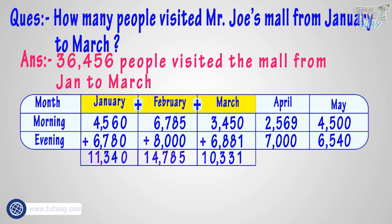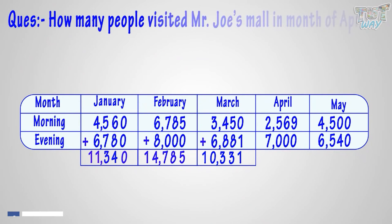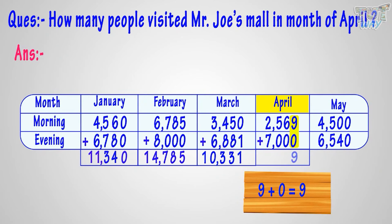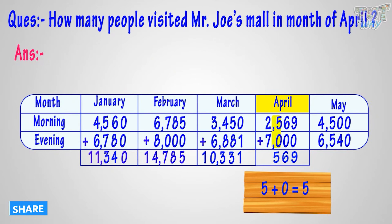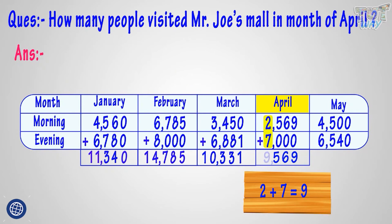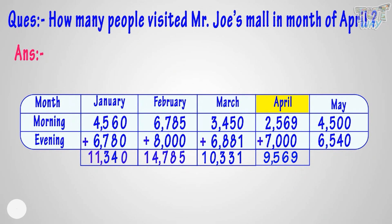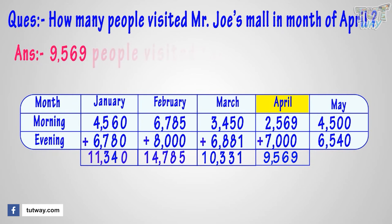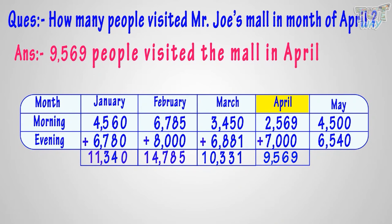So kids, you know how to add big numbers like four or five digit numbers. Now let's answer a few more questions quickly. Adding nine and zero we get nine — write nine in the sum at ones place. Adding six and zero we get six — write six in the sum at tens place. Adding five and zero we get five — write five at hundreds place. Adding two and seven we get nine — write nine at thousands place. We get nine thousand five hundred and sixty-nine people visited the mall in April.